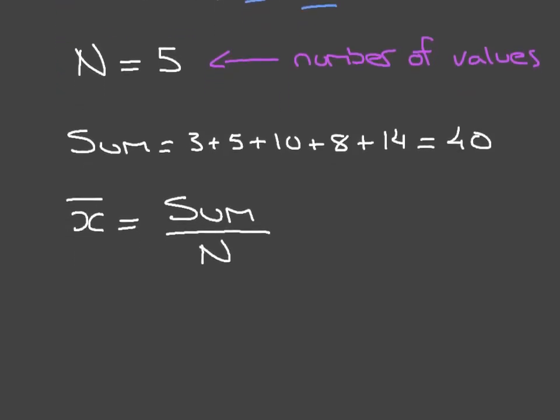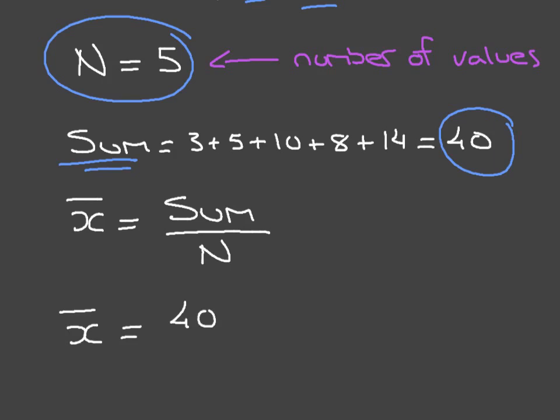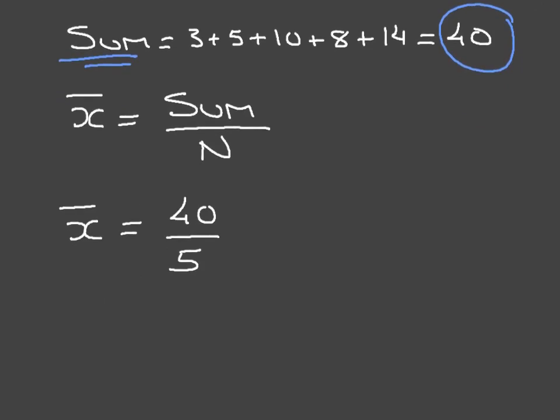Now, looking at the values we had, we had found that N was equal to 5, and the sum is equal to 40. So, in our formula here, we can replace sum and N by these two values. And we can write that the mean is equal to 40 divided by 5. And since 40 divided by 5 is 8, we have our answer. The mean is equal to 8.